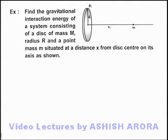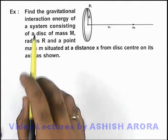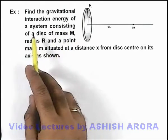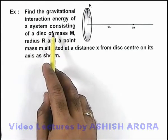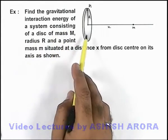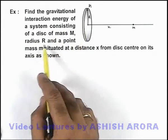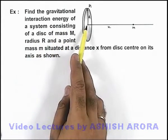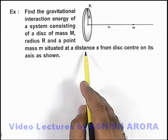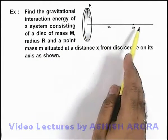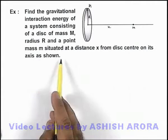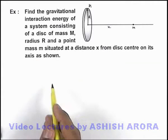In this example we are required to find the gravitational interaction energy of a system consisting of a disc of mass M and radius R, and a point mass small m situated at a distance x from the disc center on its axis, as we can see here.